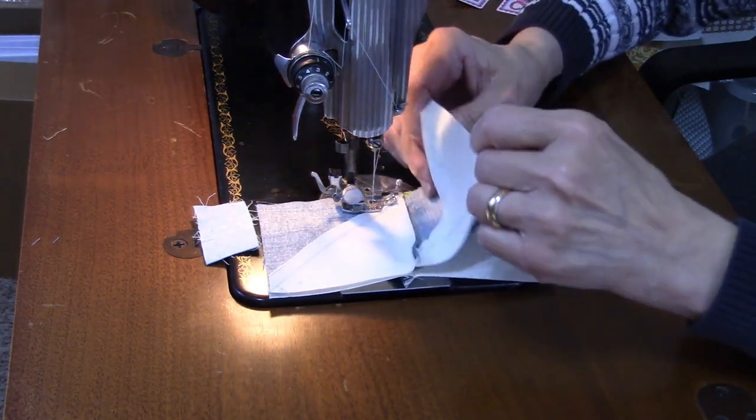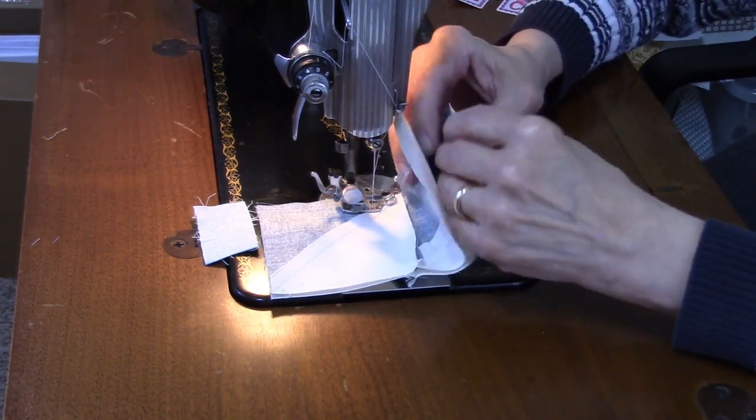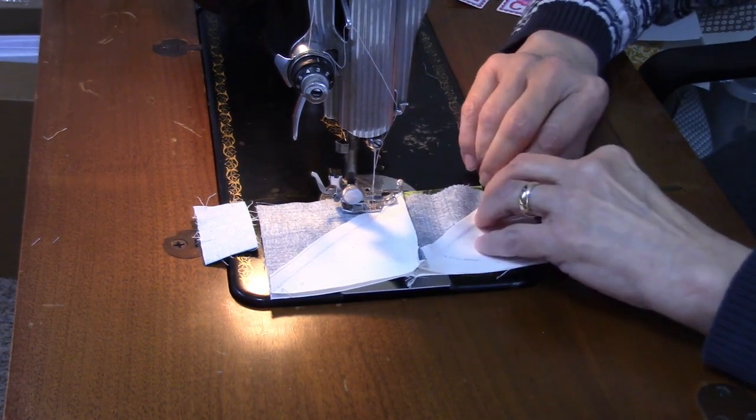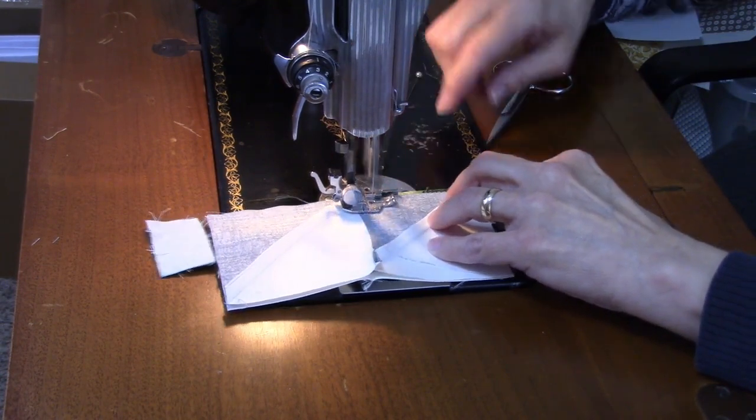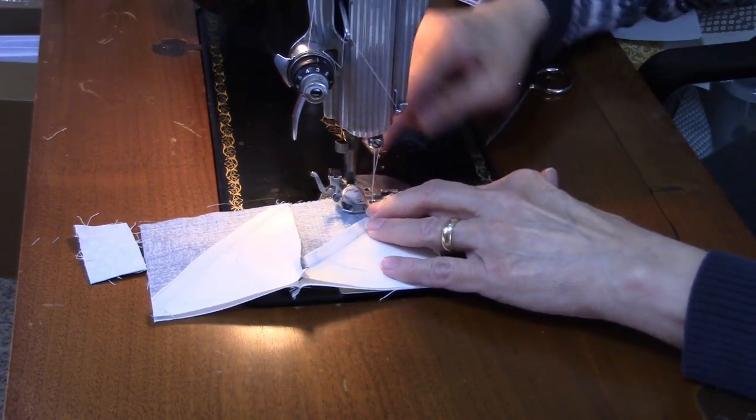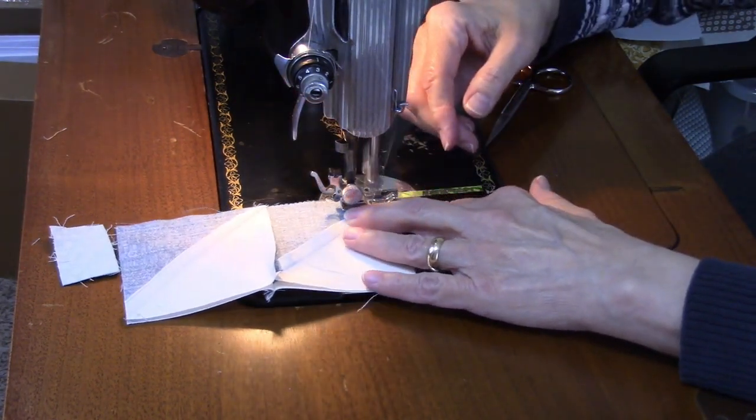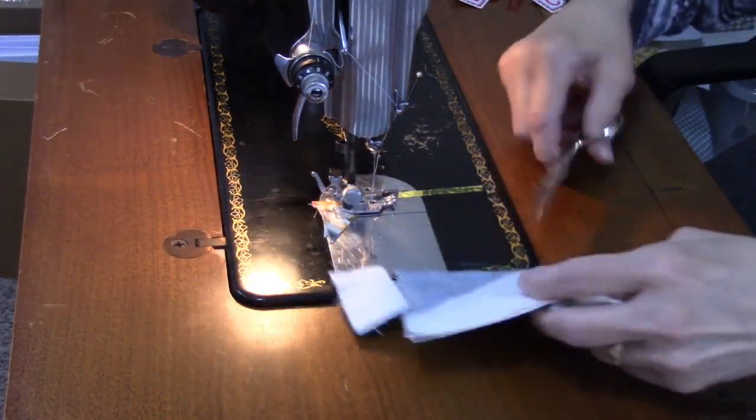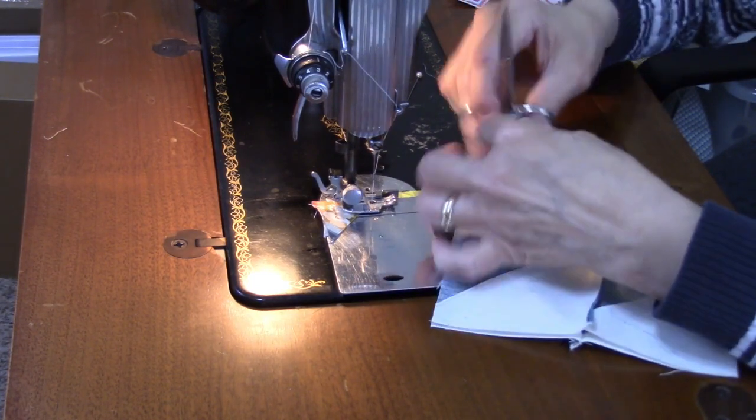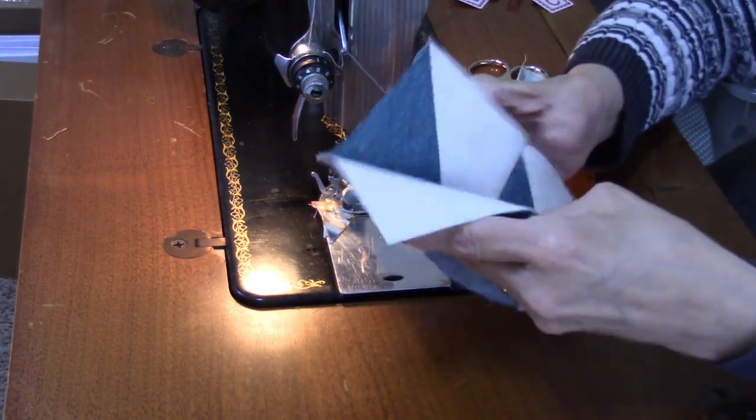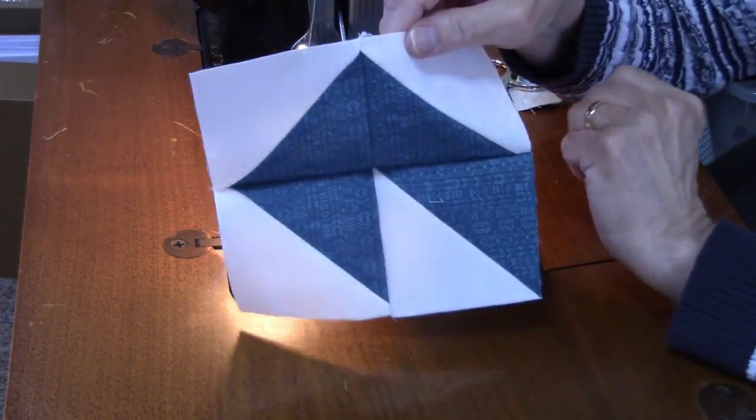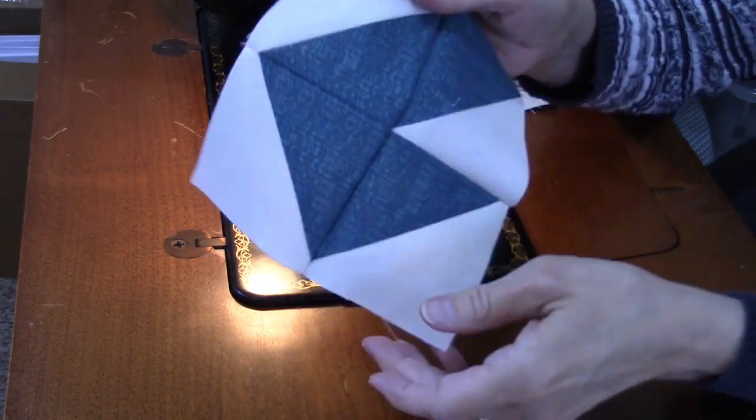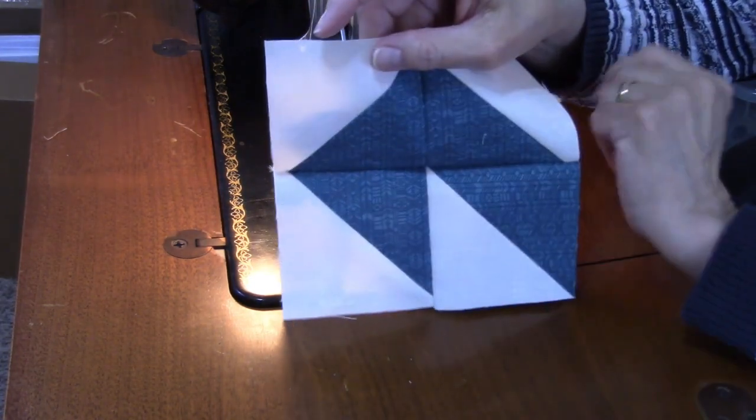And then these two points here need to match. These two seams need to meet up, so we'll see how to do that. So here's the first quarter, so I'm going to go ahead and press and then I'm going to work on the next section and I'll keep going until I have them all four done. And then I'll sew them into rows and then sew the two rows together.